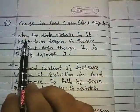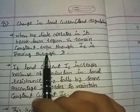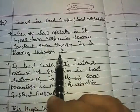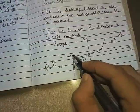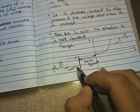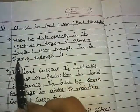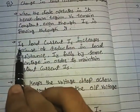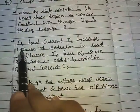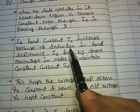Now let's see about load regulation. When the diode operates in its breakdown region, VZ remains constant even though IZ is flowing through it. When IZ is falling, VZ remains constant.